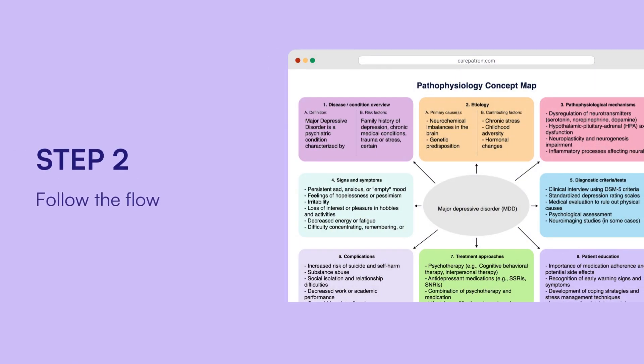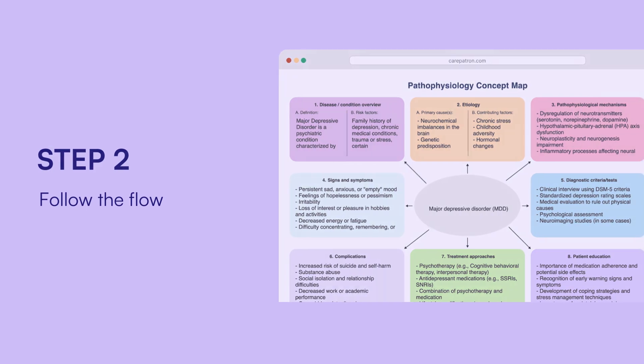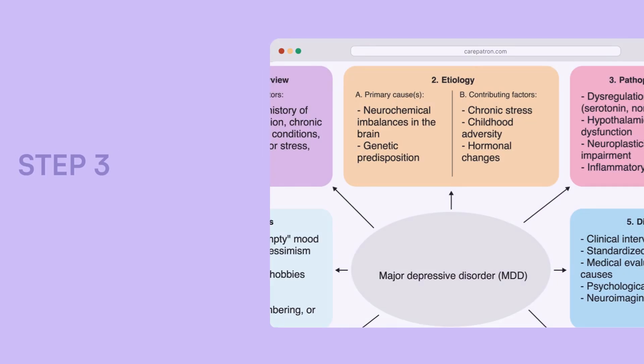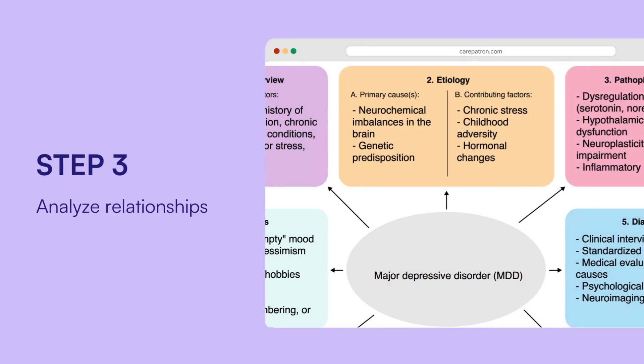Follow the flow: trace the arrows and connections between concepts to see how different factors link together. Each arrow helps explain how one aspect of the disease influences another. Analyse relationships: take a closer look at how everything is connected. This will help you see how symptoms develop, what causes them, and what complications could arise.